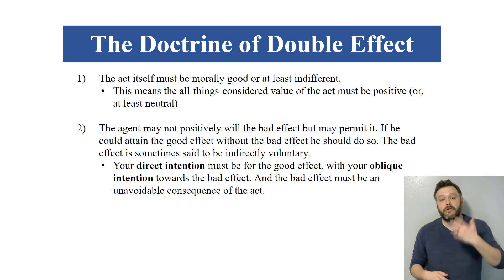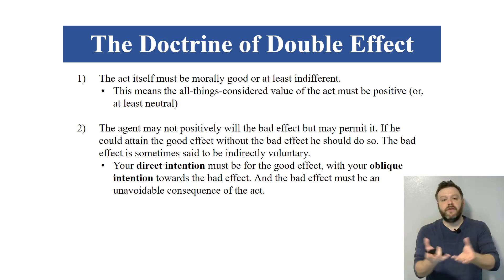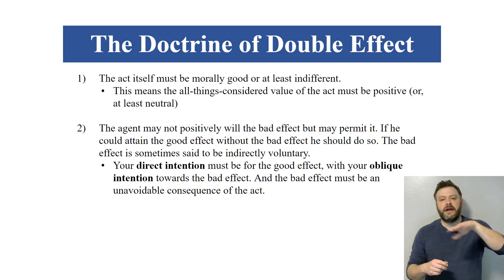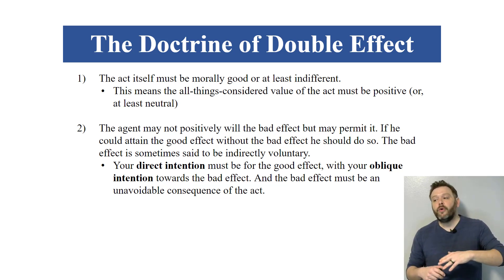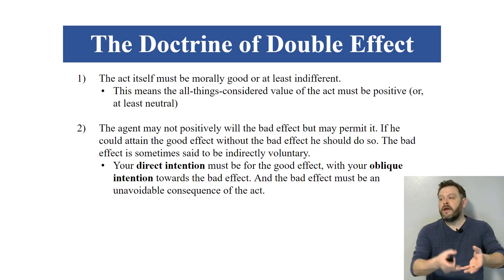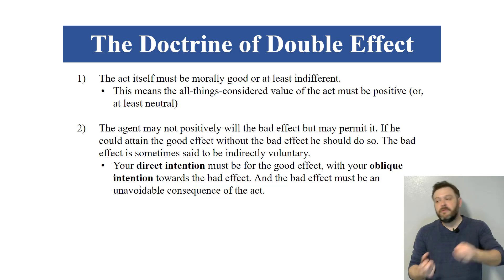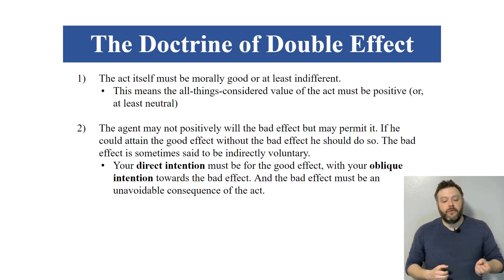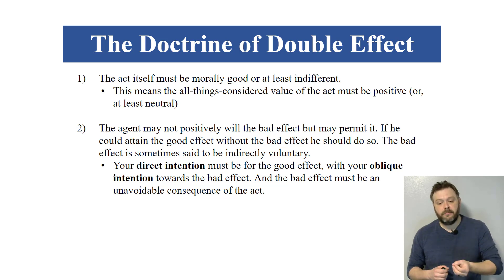Also the agent — you may not positively will the bad effect, but you may permit it. If you can attain the good effect without the bad effect, you should do so. The bad effect is sometimes said to be indirectly voluntary. The idea here is that the thing that you want to happen when you do this action is the good effect. You cannot want the bad effect to happen — you just sort of recognize that it is going to happen. We call it an indirectly voluntary action because you're still voluntarily doing something. For instance, if there are two people hanging on a cliff and you only have time to save one, you run over and save the person on the right — your intent is to save that person, but you fully recognize that the person on the left is going to lose their grip and drop.